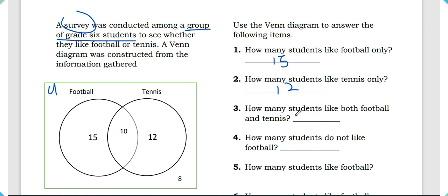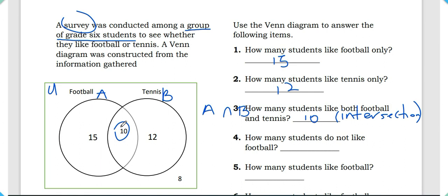Question three: how many students like both football and tennis? This is asking how many students fit in both subsets, and the answer is 10. This area is the intersection — football intersecting tennis. On a problem, if we call football set A and tennis set B, you may see it written as: what is A intersect B? That is asking which elements fall in the area where subsets A and B overlap.